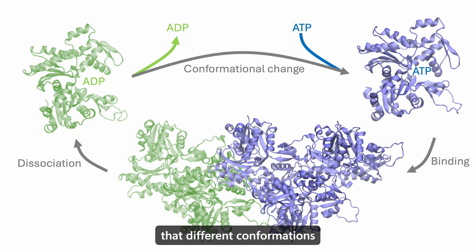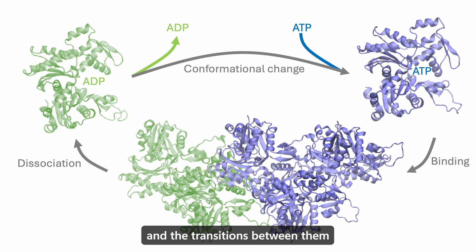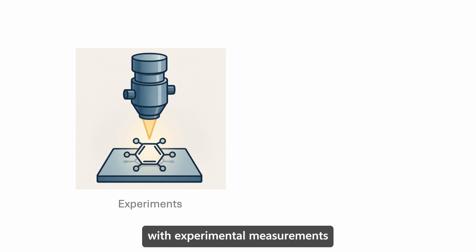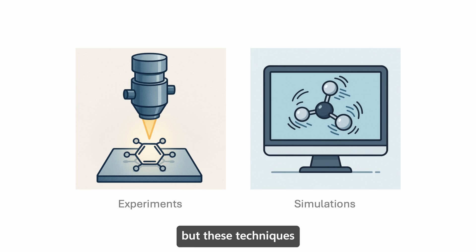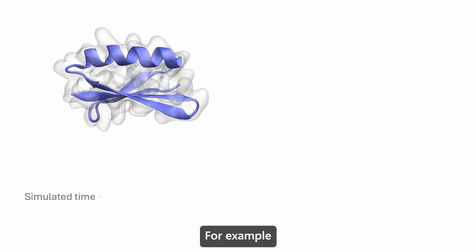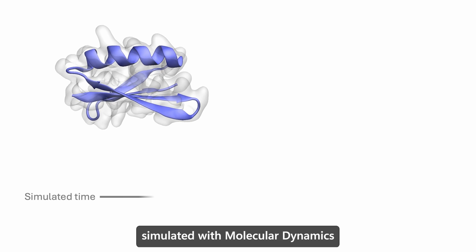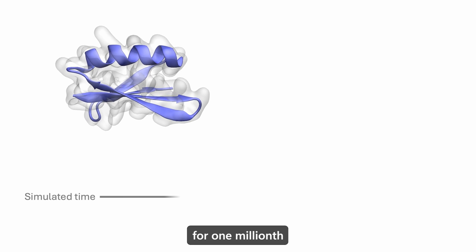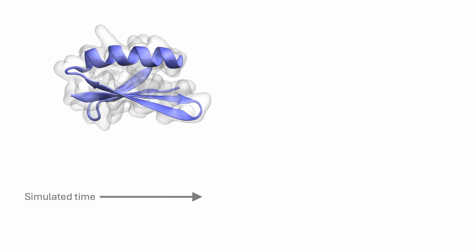This example shows that the biological function of proteins depends on their ability to change conformations, and that different conformations change the way proteins bind to other proteins. These protein conformations and the transitions between them can be revealed with experimental measurements and with molecular dynamics simulations, but these techniques are very time-consuming and expensive. For example, this is a tiny protein simulated with molecular dynamics for one millionth of a second — a microsecond.